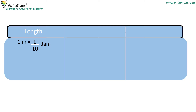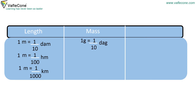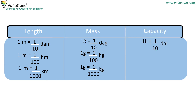Length: 1 metre is equal to 1 ÷ 10 decameter, 1 metre is equal to 1 ÷ 100 hectometer, 1 metre is equal to 1 ÷ 1000 kilometer. Mass: 1 gram is equal to 1 ÷ 10 decagram, 1 gram is equal to 1 ÷ 100 hectogram, 1 gram is equal to 1 ÷ 1000 kilogram. Capacity: 1 litre is equal to 1 ÷ 10 decalitre, 1 litre is equal to 1 ÷ 100 hectolitre, 1 litre is equal to 1 ÷ 1000 kilolitre.